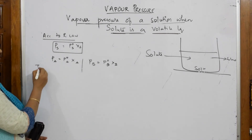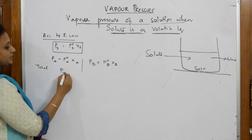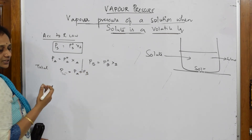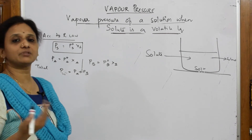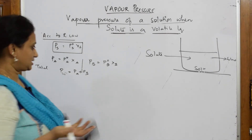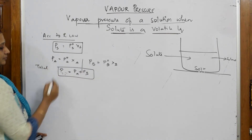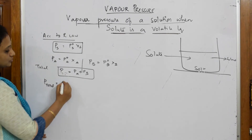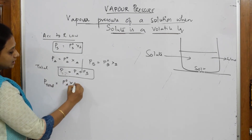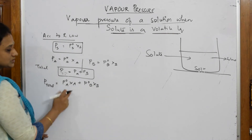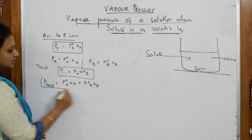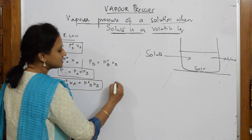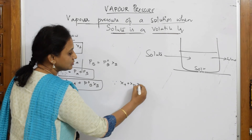Now, what is the total pressure? Total pressure P-total equals PA plus PB. We are trying to prove what the total pressure depends on. Just add both. So P-total = P0A·XA + P0B·XB. This is your total pressure. Now, we very well know from our mole fraction calculation that XA + XB = 1.